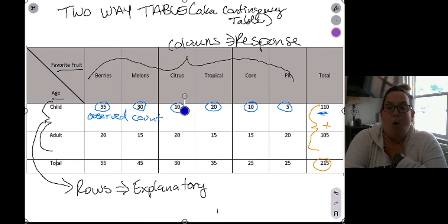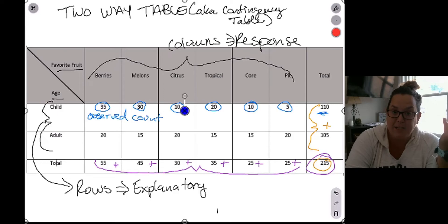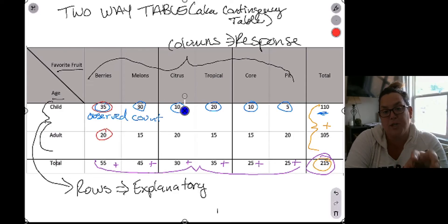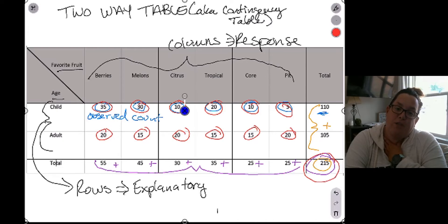If you add up all of the cells at the bottom, those totals would also sum to 215. So the total row sums to 215, the total column sums to 215, and if you took every observed count for the adults and the children, all of the individual observed counts, that would sum to 215 as well.